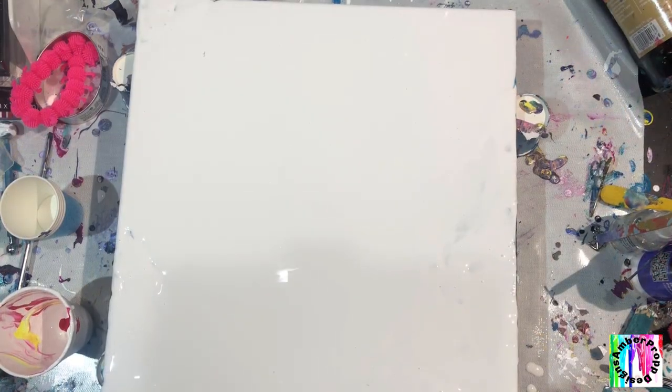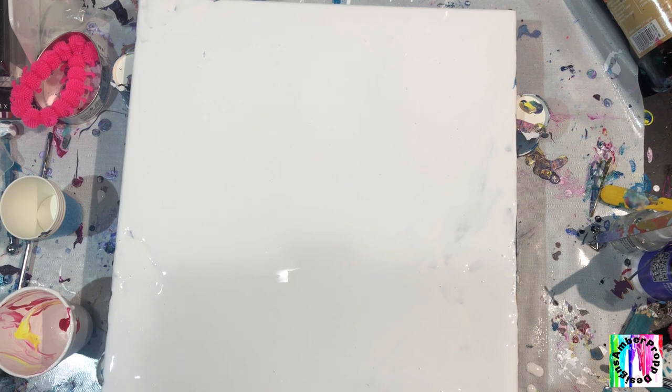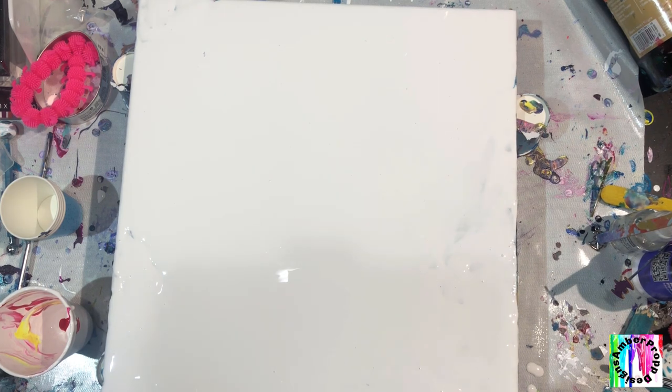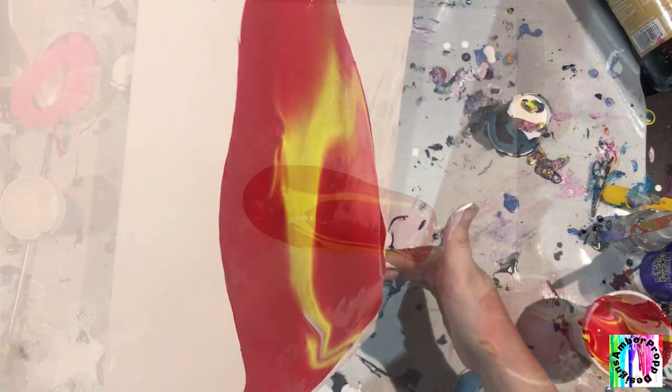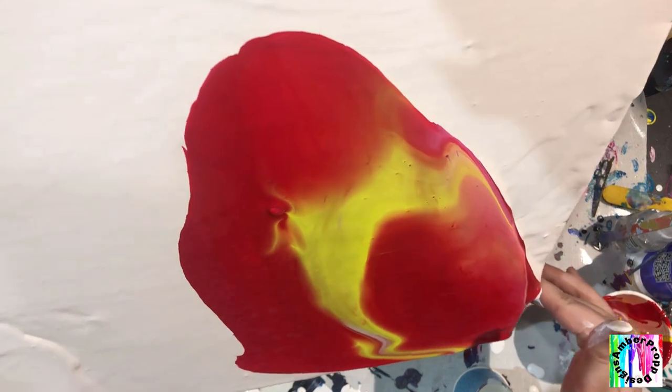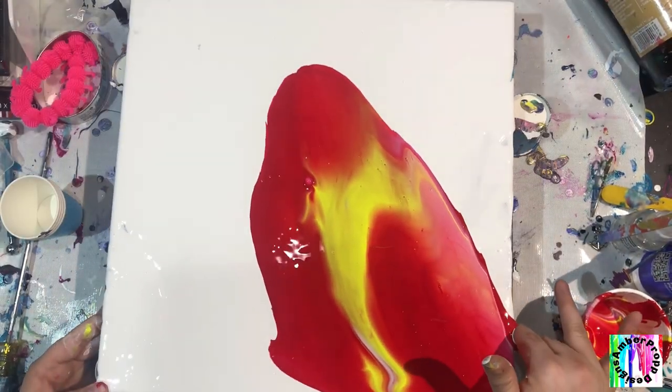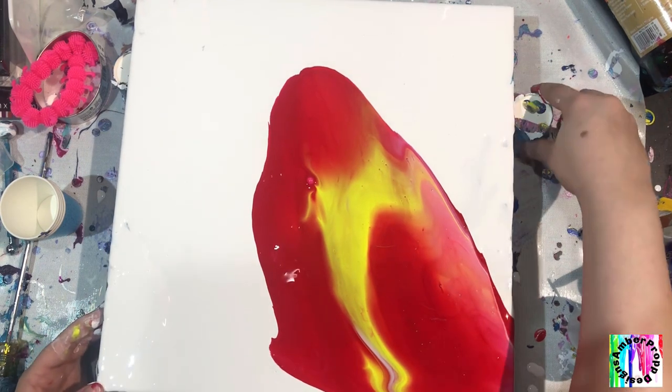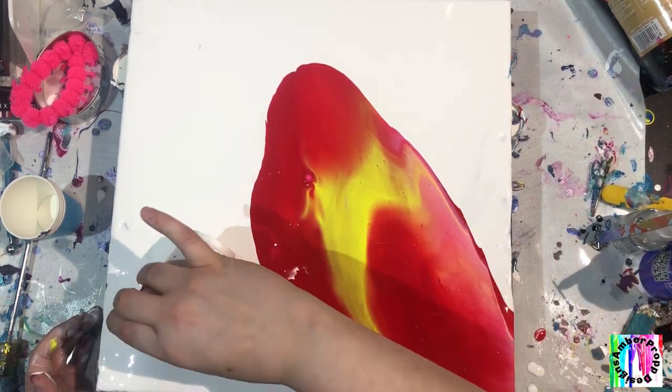The whole point is not to get a bunch of cells in this painting. It is actually to get the least amount of cells as we can while we do our pour and let the silicone kind of do its job. I want almost like that gradient look. Because I didn't want too many cells, I only put Floetrol in my white for the base and I just used water in my other colors, the red and yellow.